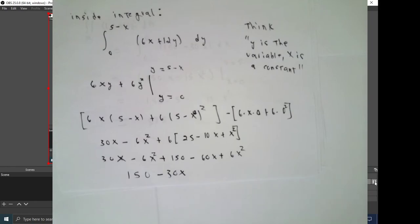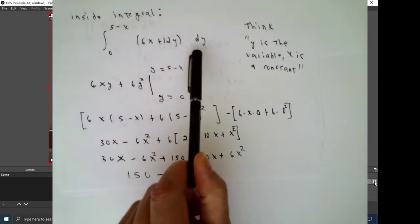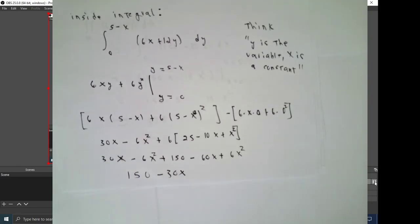So we have two levels of computation to do here. We have to calculate the inside integral, the integral from 0 to 5 minus x of 6x plus 12y with respect to y, thinking to ourselves, y is the variable and x is a constant. The result of that can't depend on y, but it can depend on x. So grinding through the usual techniques, in the end, if I've done my computations correctly, the inside integral is 150 minus 30 times x. As expected, it doesn't depend on y, but it does depend on x.